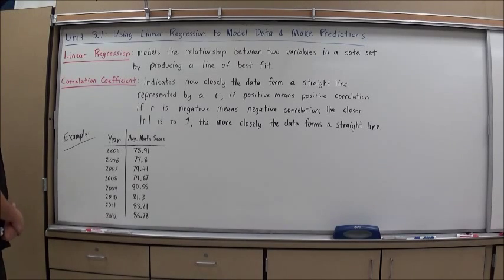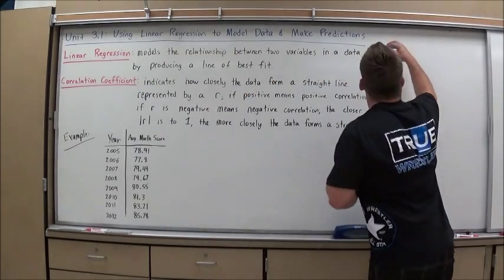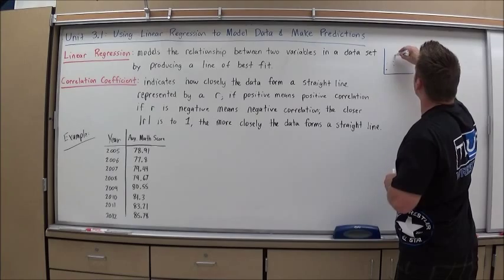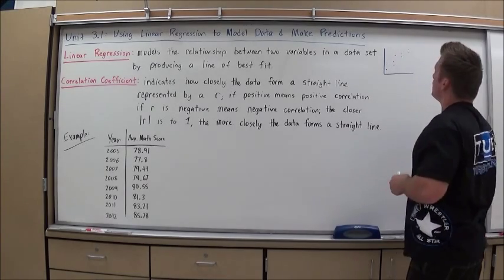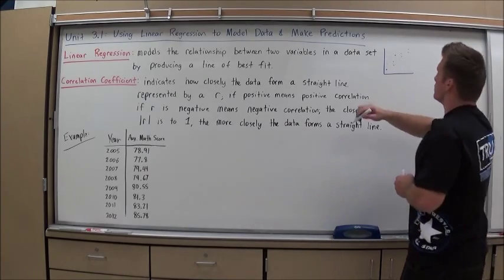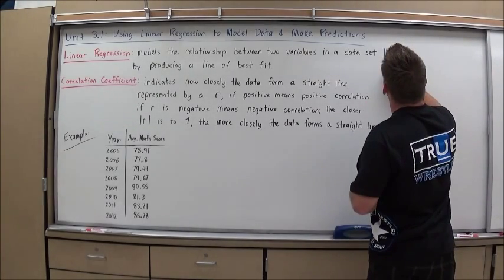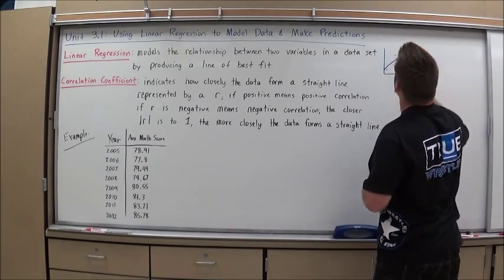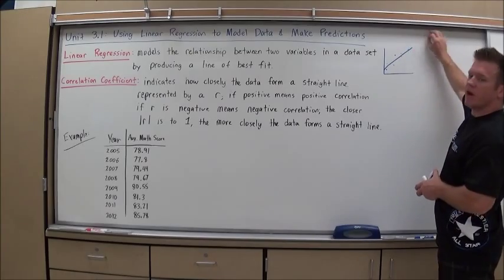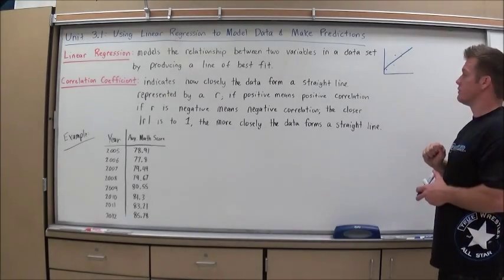What is linear regression? Linear regression is the process of modeling the relationship between two variables in a data set by producing a line of best fit. If I have a discrete set of data points and they look like they're basically making a line, forming a line, obviously they're a little bit spread out, linear regression is the act of trying to come up with a line that could best represent them. And then hopefully I could use that line to guess where these points might be out in the future somewhere I don't know answers to.